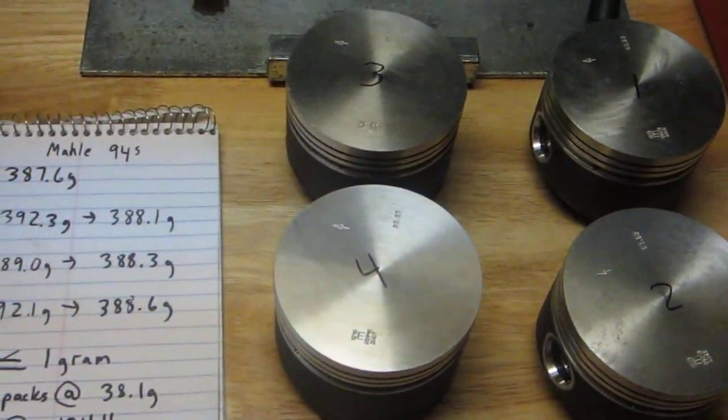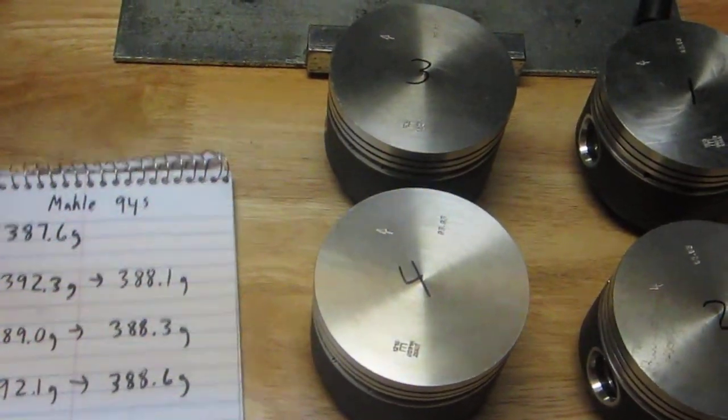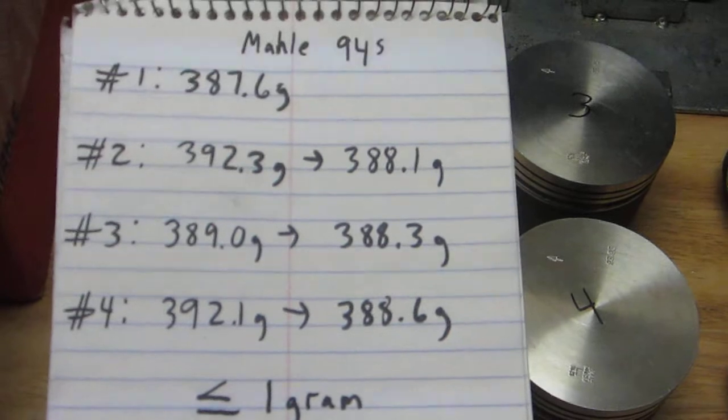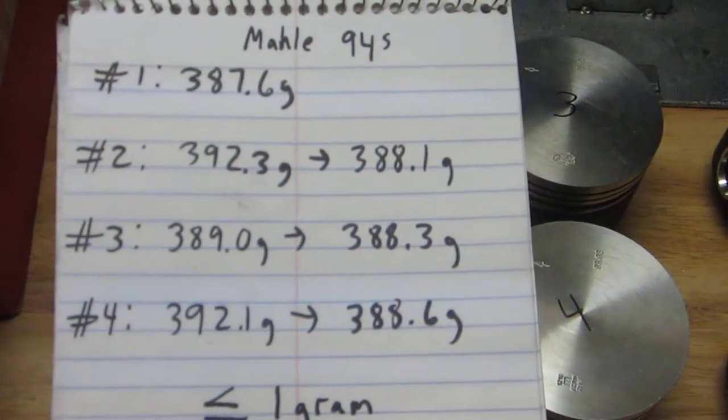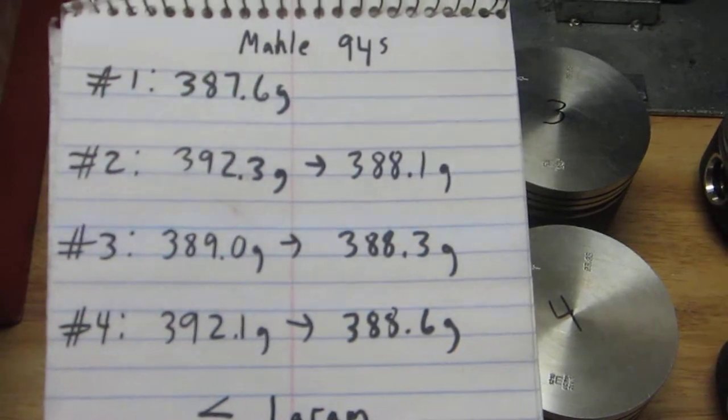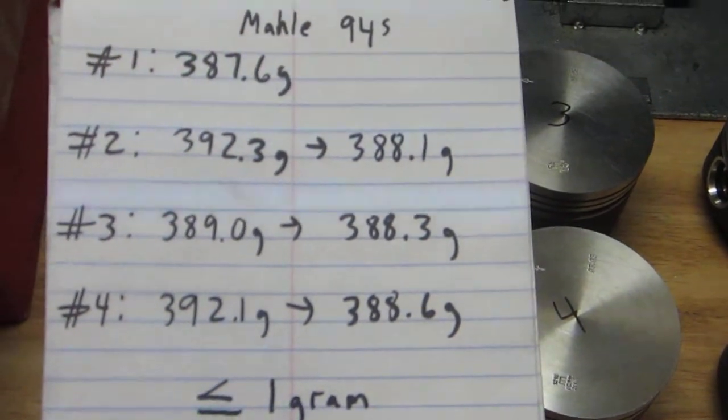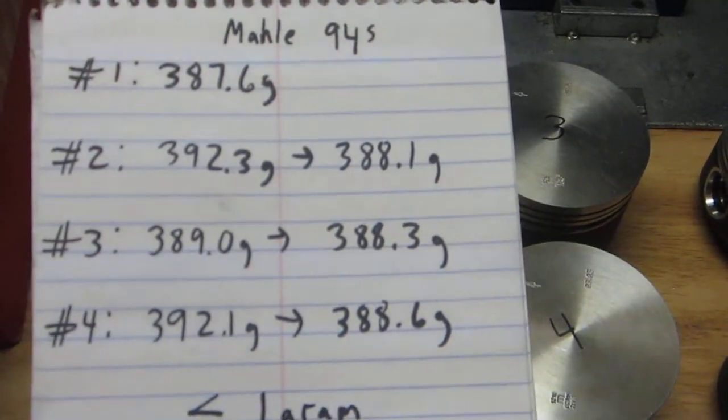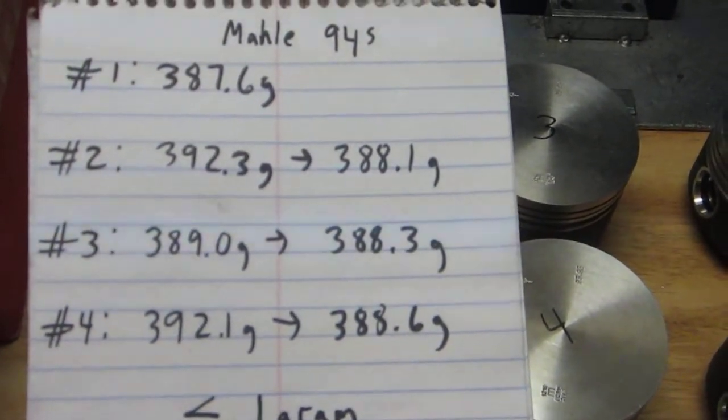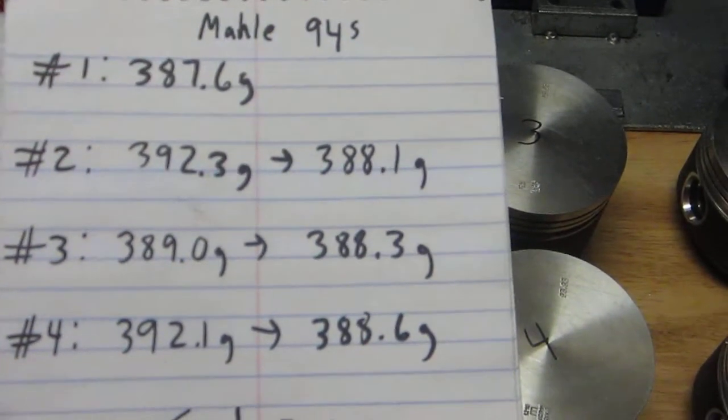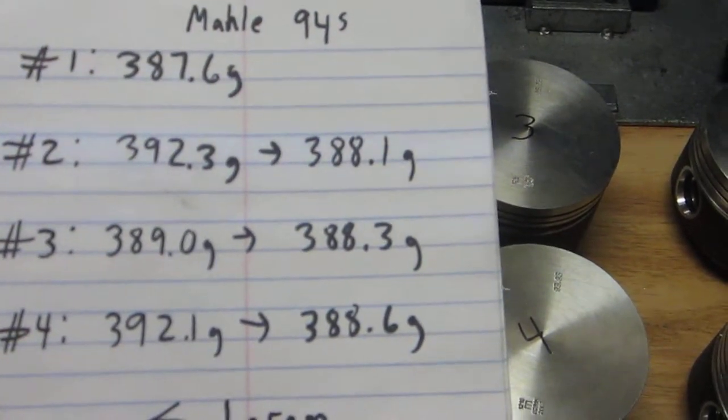I got them within about a gram of each other. What I've got here on this chart is what I started with. The number one piston was the lightest at 387.6 grams, number two was 392.3, number three was 389.0, and number four came in at 392.1. So there was a little bit of variation there.